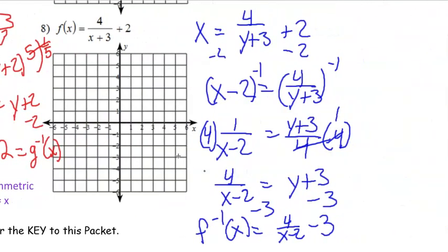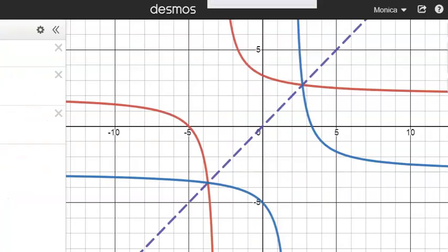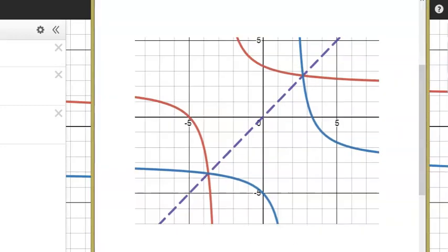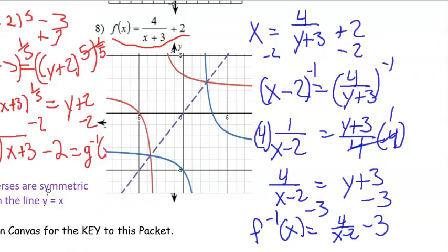So let's go ahead and graph these two equations. We'll do the original in red and the inverse in blue, and it should be symmetric with the line y equals x. And here's your graph. Go ahead and try the rest of these problems for this page on your own, and then check the key to this packet to check your work.